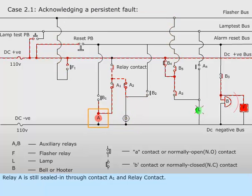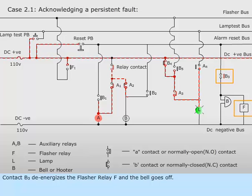Relay A is still sealed in through contact A sub 1 and relay contact. Contact B sub 2 opens the sealed in circuit of relay B. Contact B sub 3 de-energizes the flasher relay F and the bell goes off.